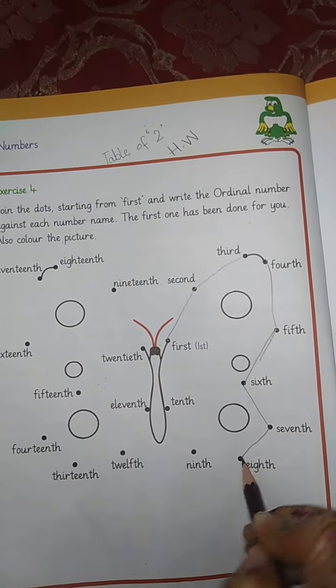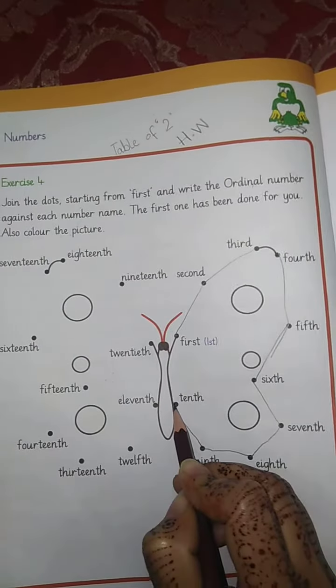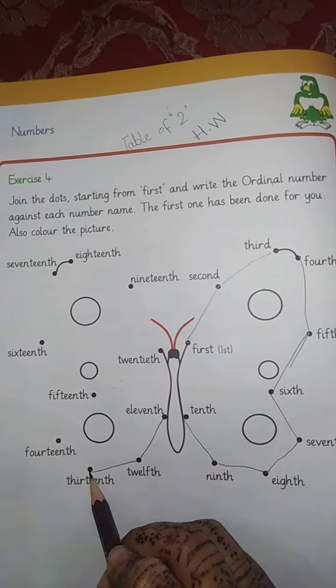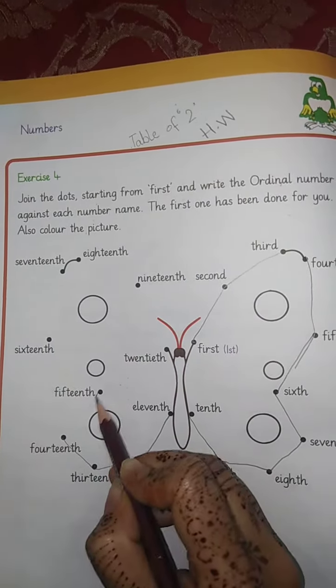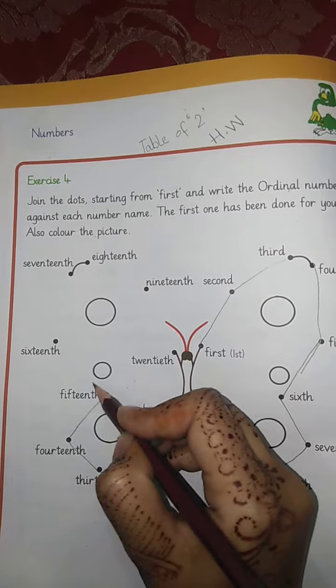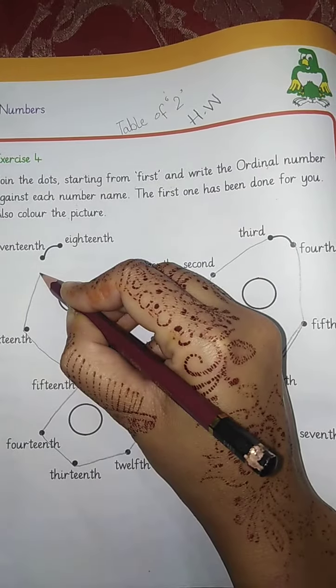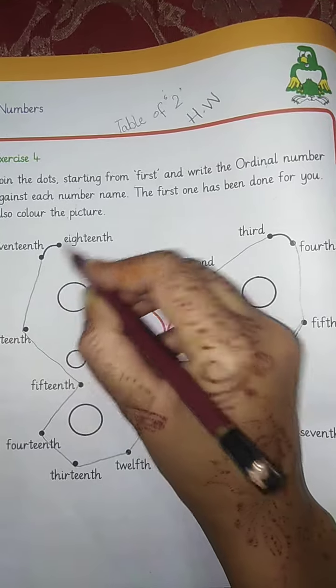Eighth, ninth, tenth, tenth, tenth, seventh, tenth, 12th, 13th, 14th, 15th, okay. 15th ke baad hai 17th, 16 sorry, 17th.